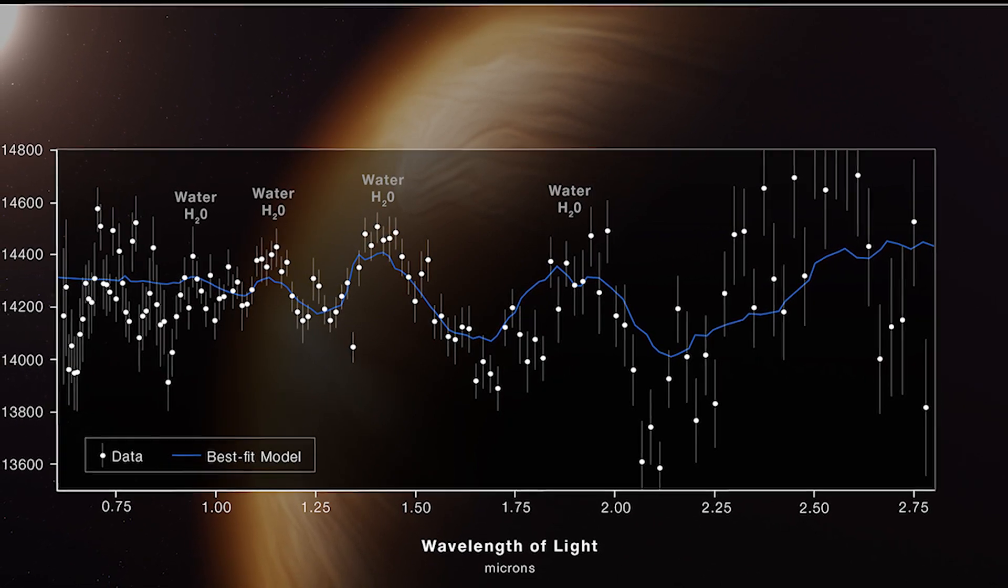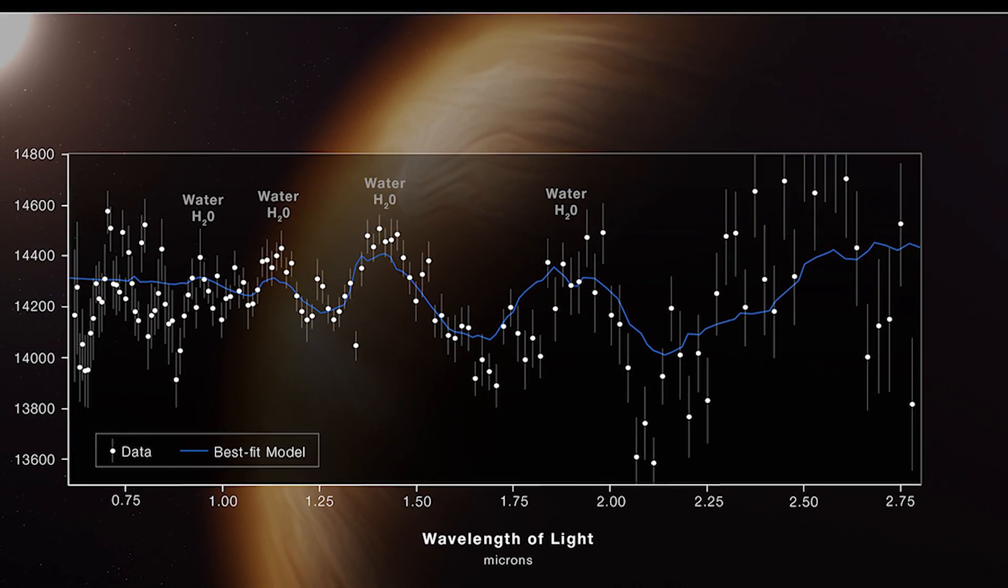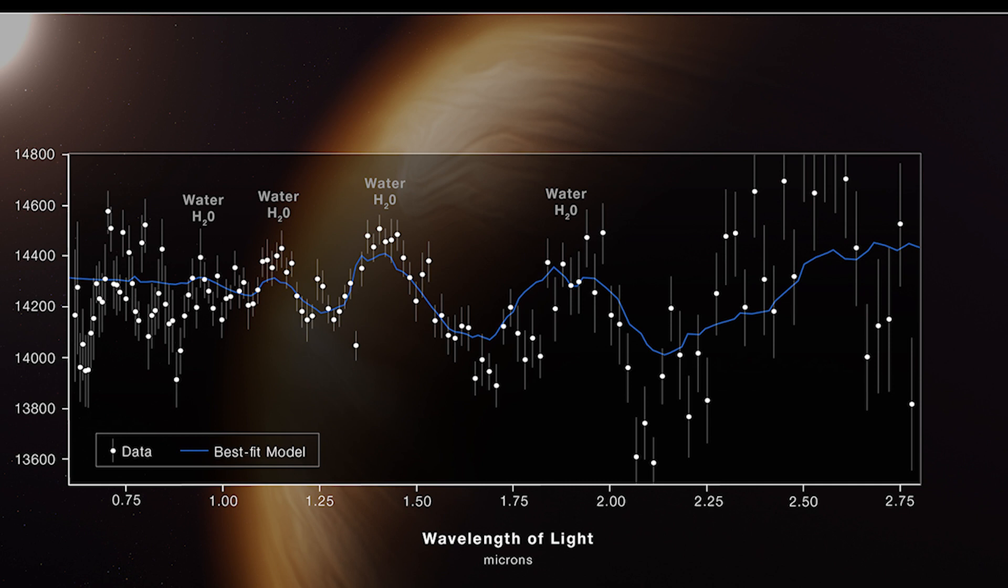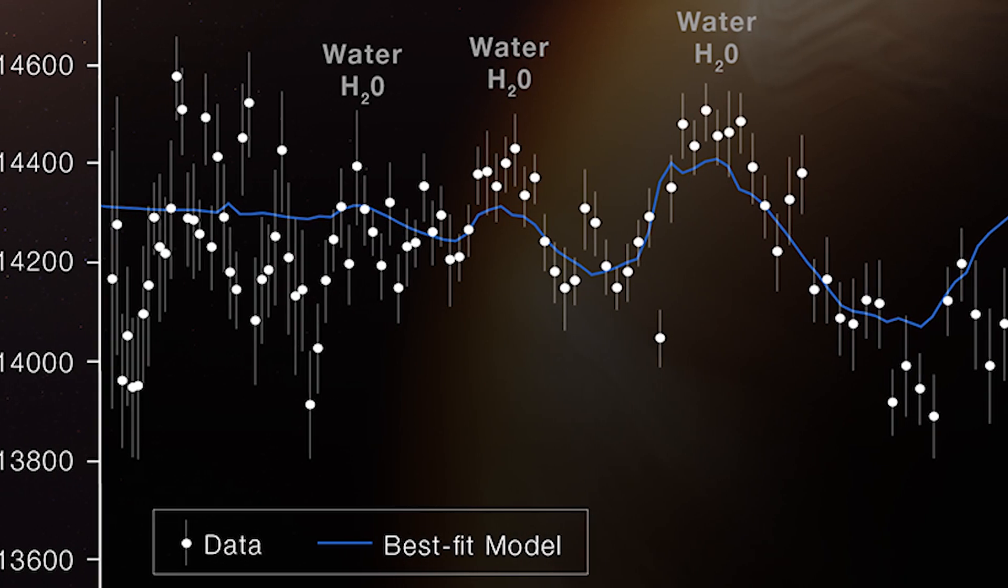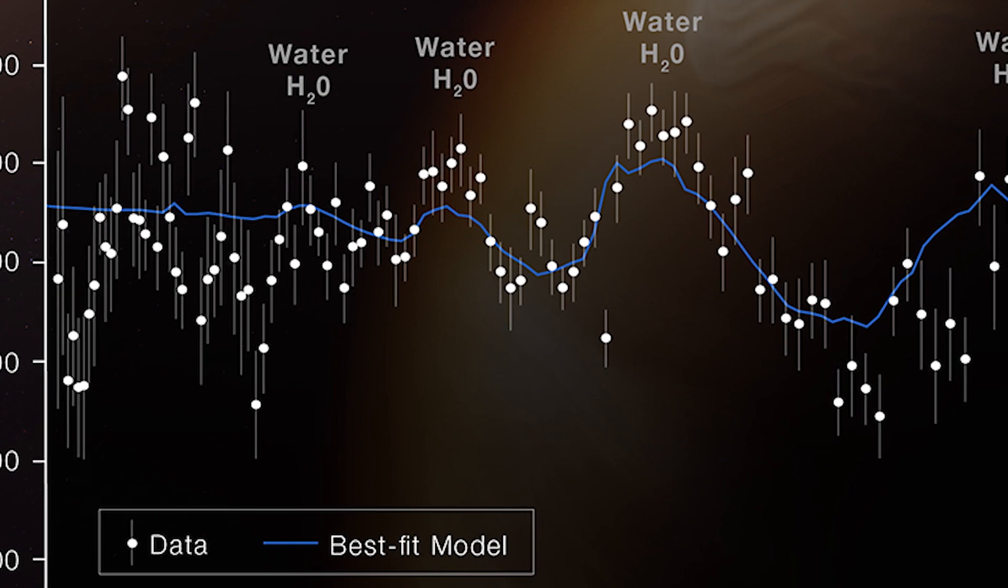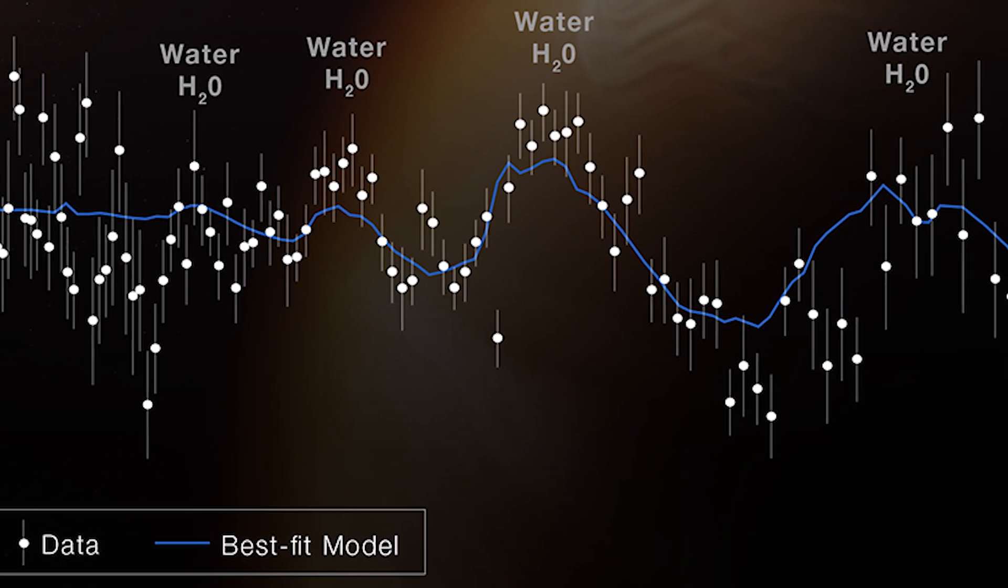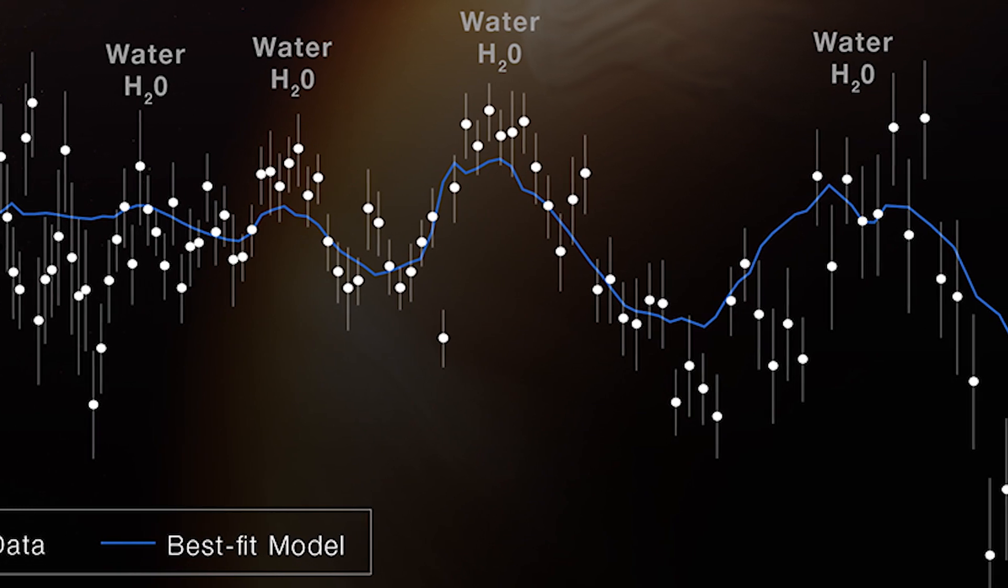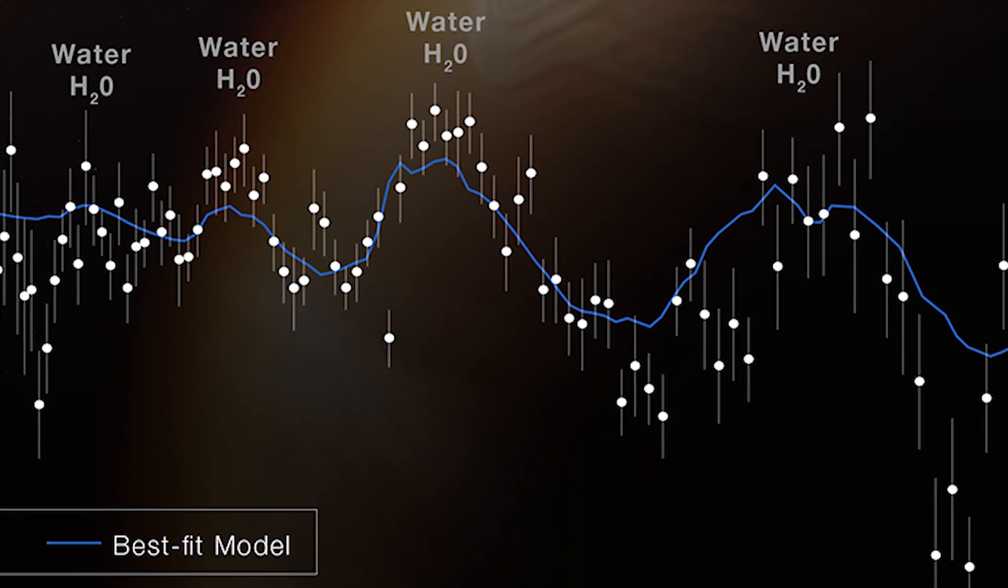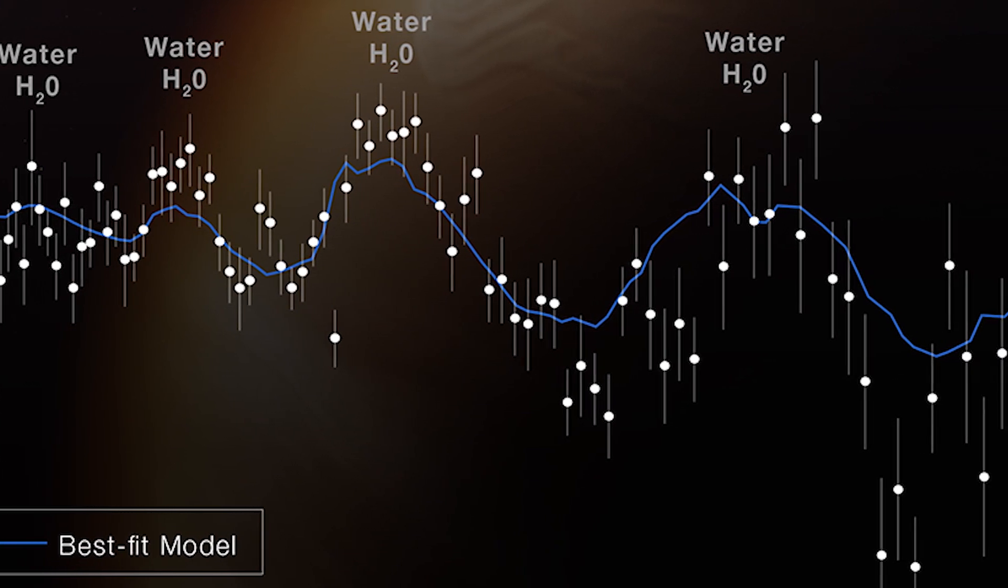The difference between the best fit models shown here and the data reflects the additional work to be done in analyzing and interpreting the data and the planet. Although complete spectrum analysis will take additional time, it is possible to draw some preliminary conclusions. The labeled peaks in the spectrum indicate the presence of water vapor. The height of the water peaks, which is less than expected based on previous observations, is evidence of the presence of clouds that suppress the water vapor features.